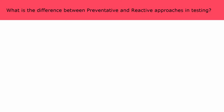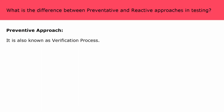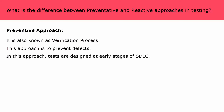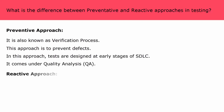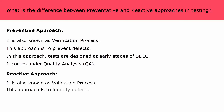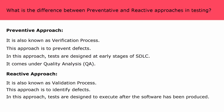What is the difference between preventive and reactive approach in testing? Preventive approach is also known as the verification process. This approach is to prevent defects. Tests are designed at early stages of SDLC, before the software has been produced. Testers try to prevent defects in early stages — it comes under quality assurance. Reactive approach is also known as the validation process. Tests are designed to execute after the software has been produced. Here we try to find defects — it comes under quality control.